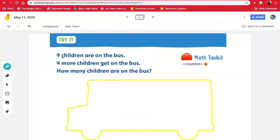Try it. Nine children are on the bus. Four more children get on the bus. How many children are on the bus? So let's highlight the important information. So we know nine children are already on the bus. So that number is important, nine. Four more get on the bus. So four is another important number. And we know it's four more. So that means we already have the nine and we need to add four more.